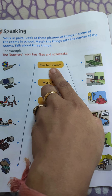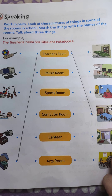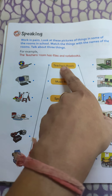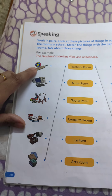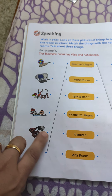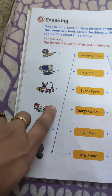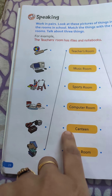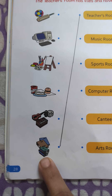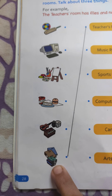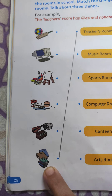So students, the teacher's room is also known as the staff room. What do you see in the teacher's room? Can you tell me? We find — bat and ball? No. Musical instruments? No. What do we find? Notebooks and copies. So we find notebooks and copies in the teacher's room, that is in the staff room.